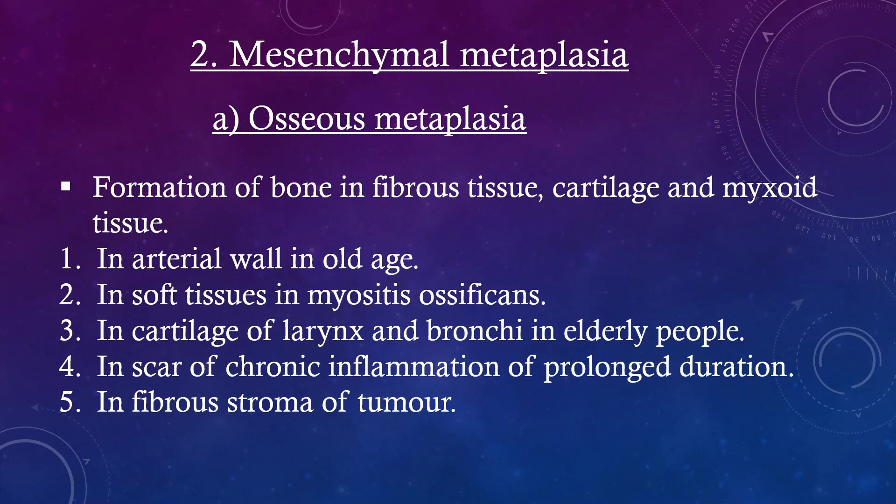Mesenchymal Metaplasia — Osseous Metaplasia: formation of bone in fibrous tissue, cartilage, and myxoid tissue; in arterial walls in old age; in soft tissues in myositis ossificans; in cartilage of larynx and bronchi in elderly people; in scars of chronic inflammation of prolonged duration; and in fibrous stroma of tumours.